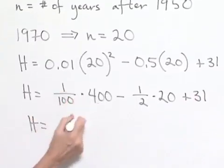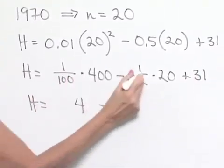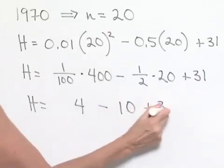One hundredth times 400 is 4. One half times 20 is 10, and then plus 31.